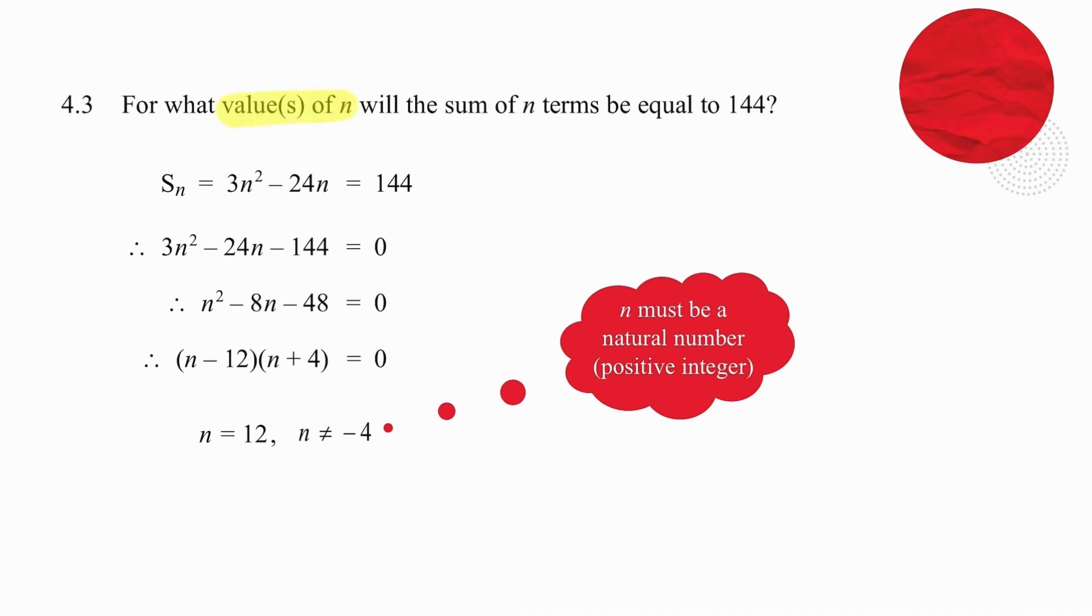Question 4.3. We've been asked now to work out the value of n, n values, so there could be one or two answers, given that the sum of those n terms has to be equal to 144. The question is much easier than one would expect. They've given us the formula for the sum of n terms and the result. So we simply create a standard form equation, put the equation into simplest form, factorize and solve.